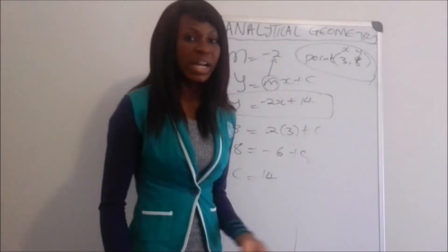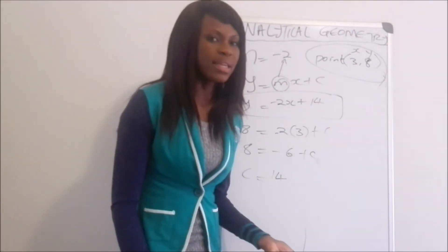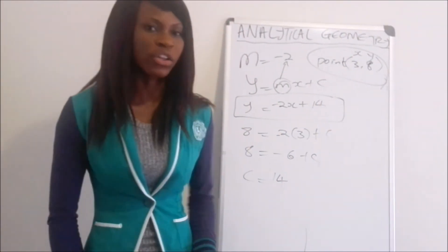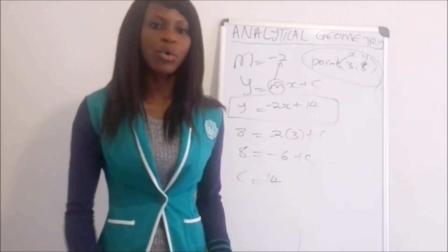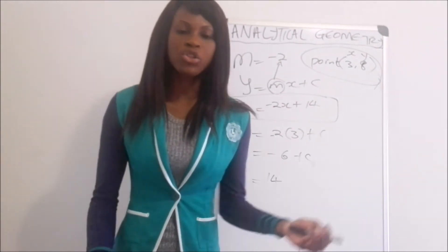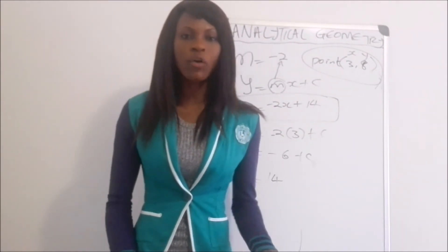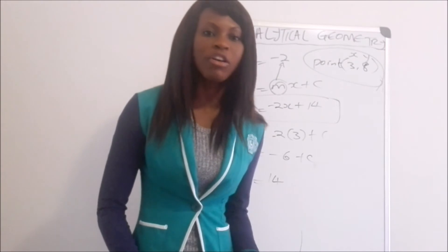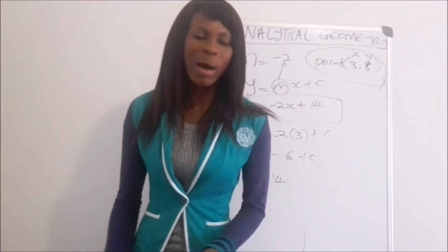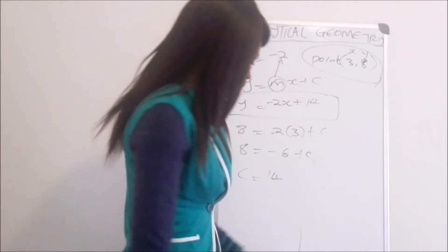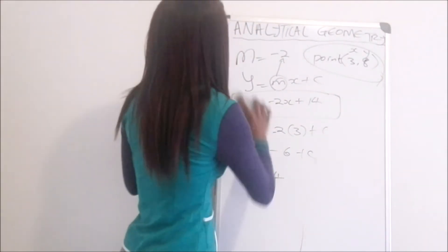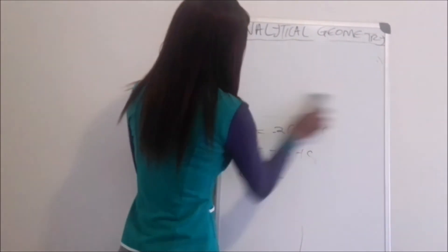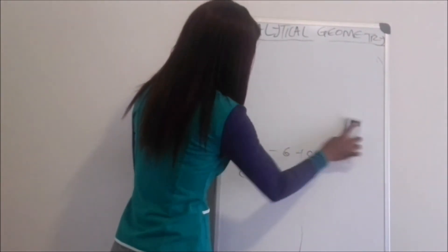When you are given the gradient and another point on the graph, it is even easier — you just substitute the gradient and use the given point to find the value of the y-intercept. Let's do one more, which is our last question for this lesson.